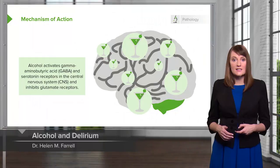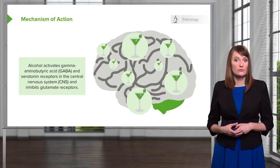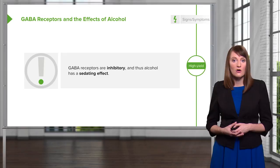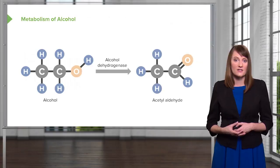Going into a little bit more detail about alcohol: the way alcohol works is it actually activates GABA and serotonin receptors in the central nervous system and it inhibits glutamate receptors. This is a problem because GABA receptors are inhibitory, and therefore alcohol can have a very sedating effect on individuals, making it dangerous.